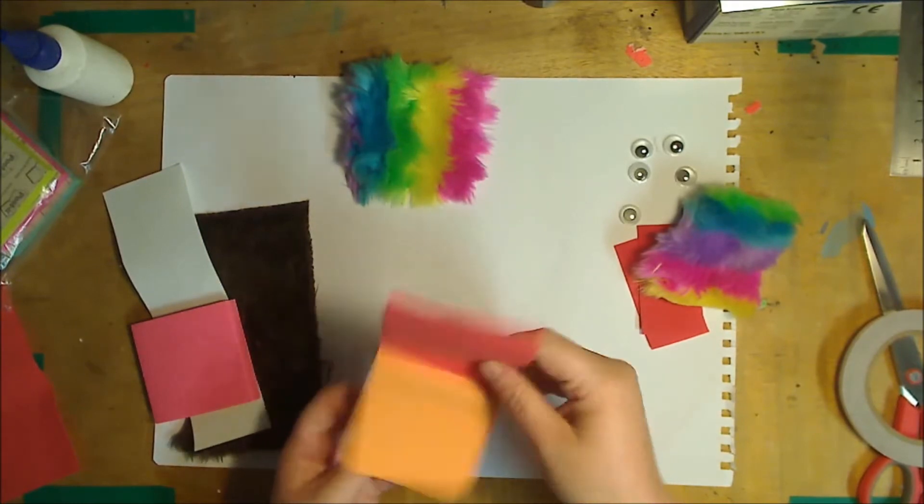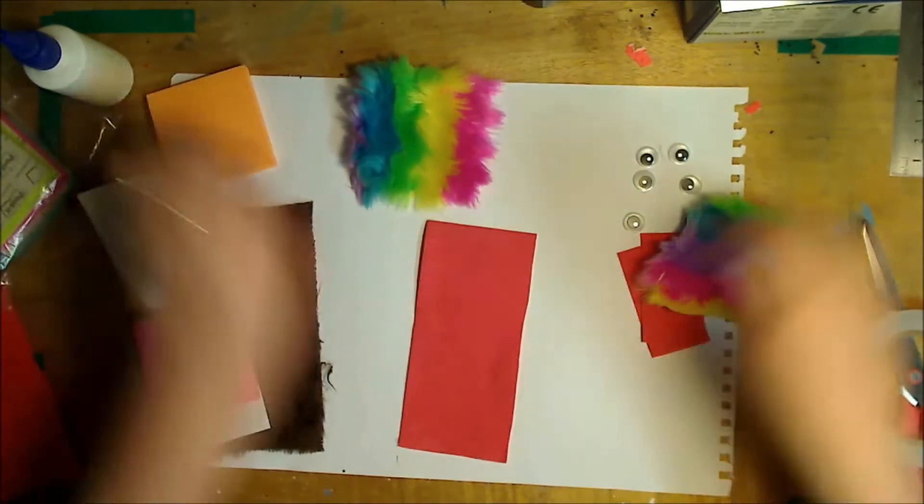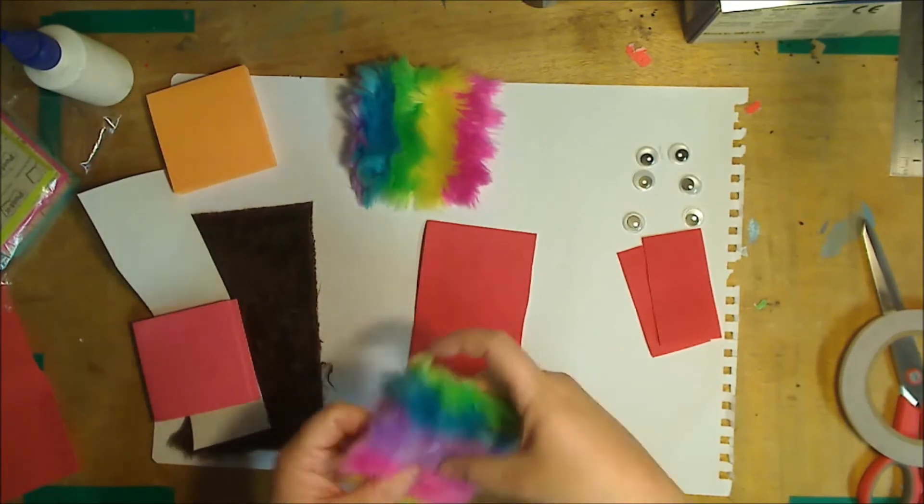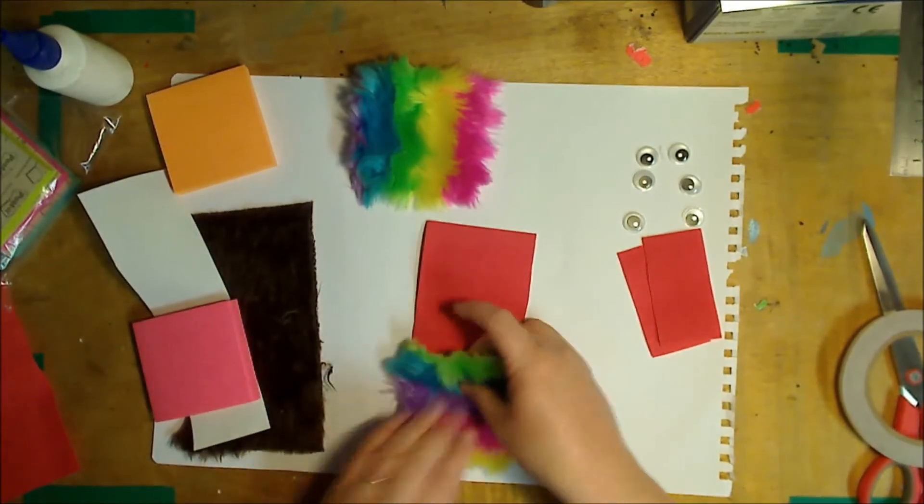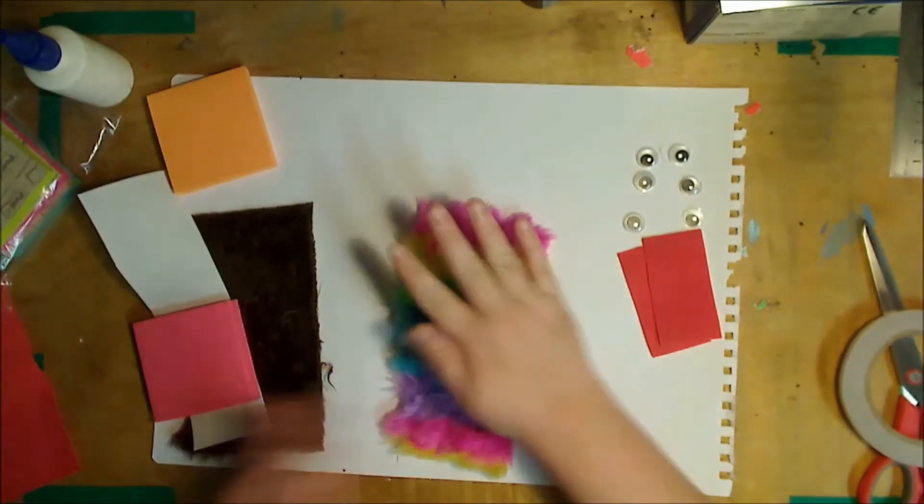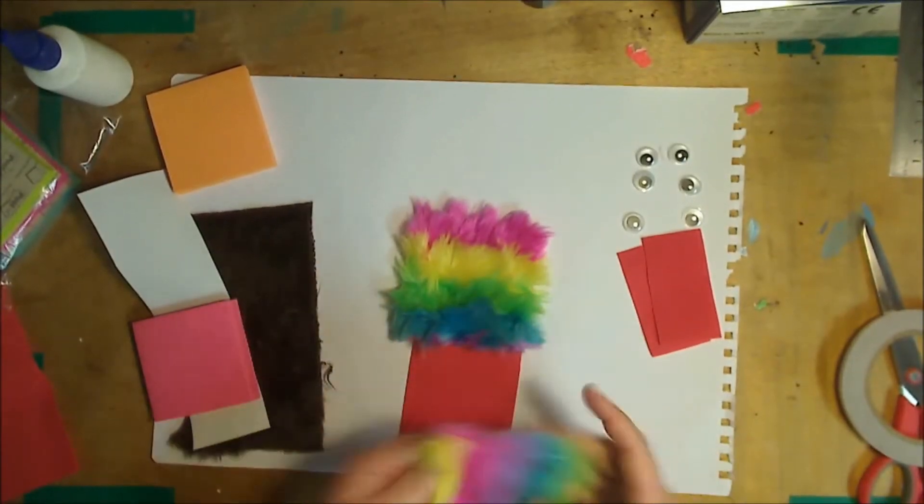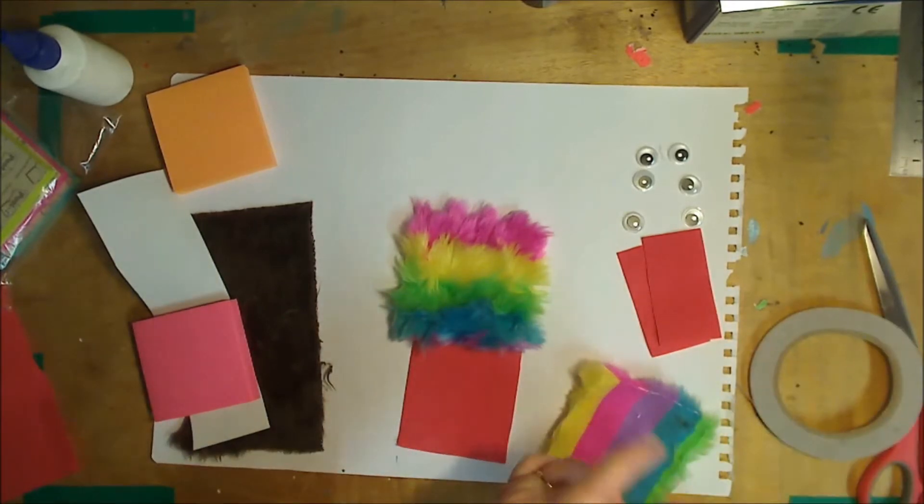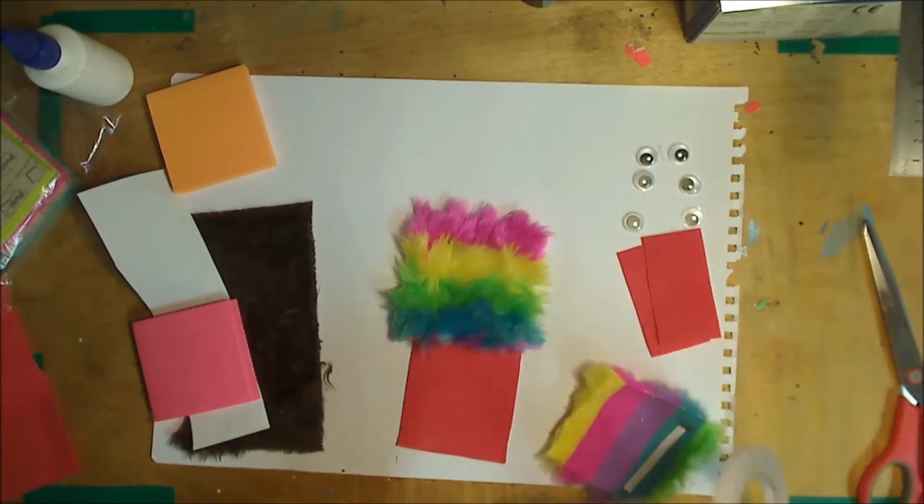And then attach your fur. So we're going to have a lovely rainbow one, just for something different. I'm going to use double-sided tape to attach the fur, mostly because I don't have fabric glue, but the double-sided tape works well.